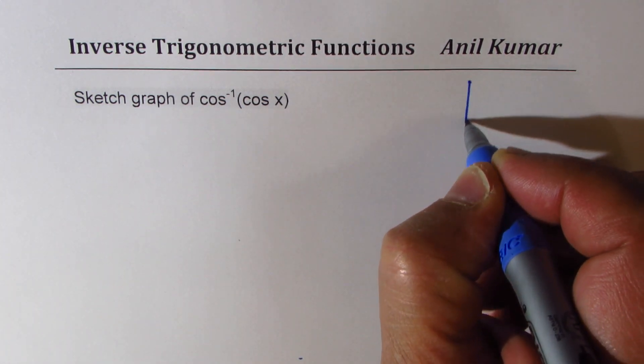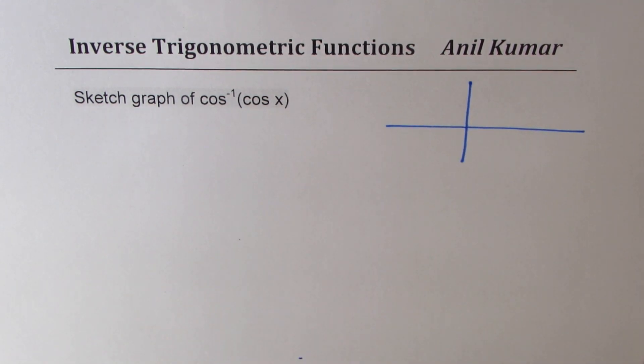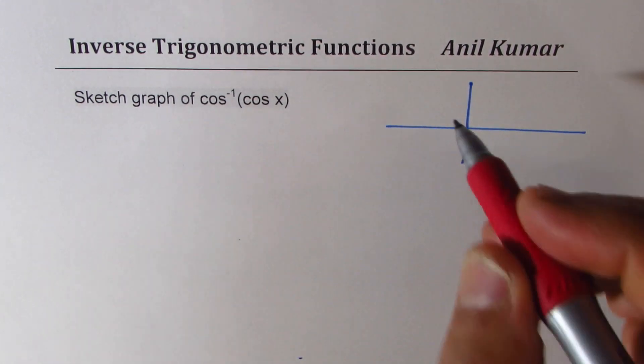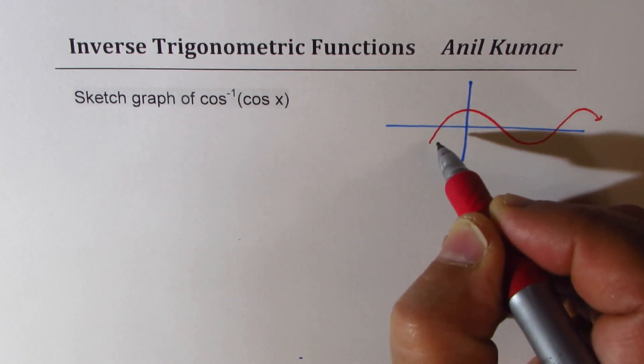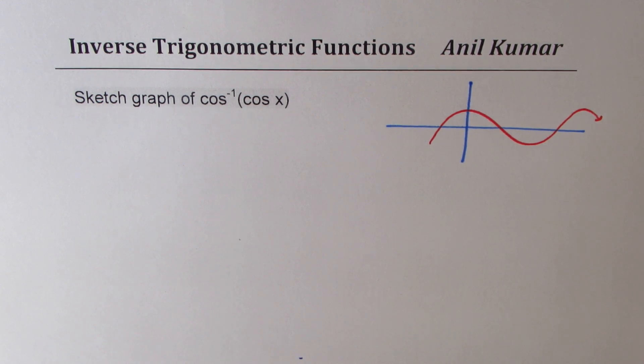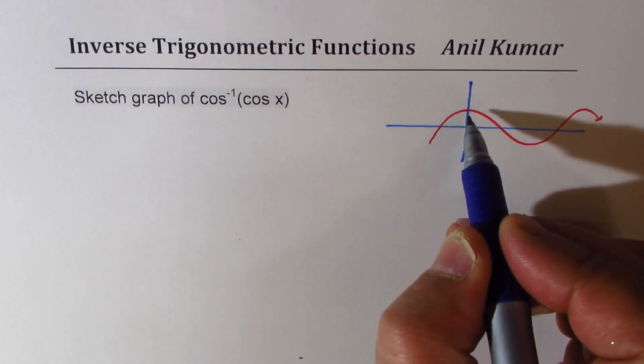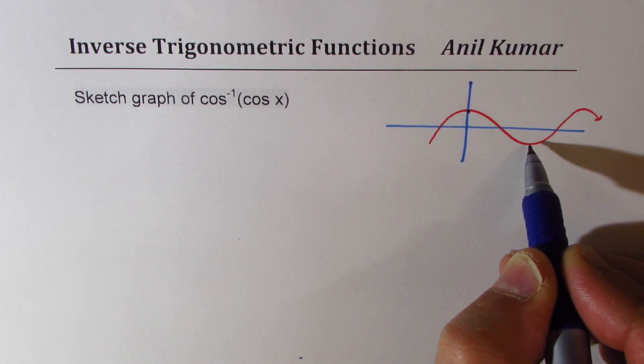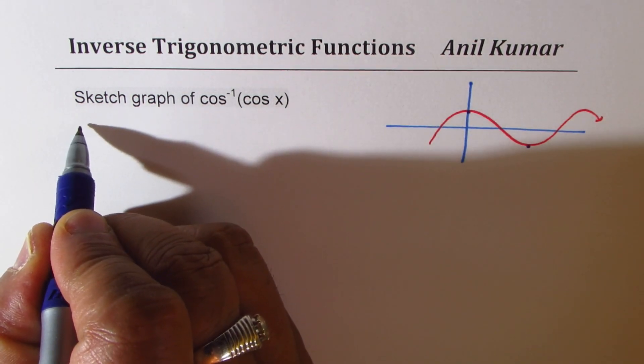Let me remind you that cos x is a periodic function, which could be sketched something like this. Now, to find the inverse of cos x, we actually restrict the domain between 0 to pi.